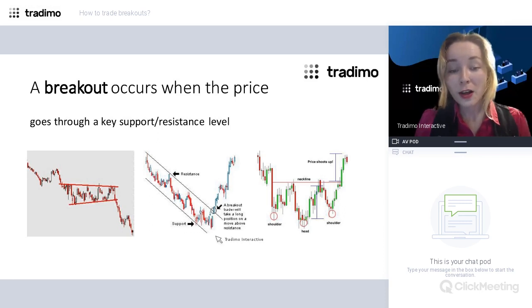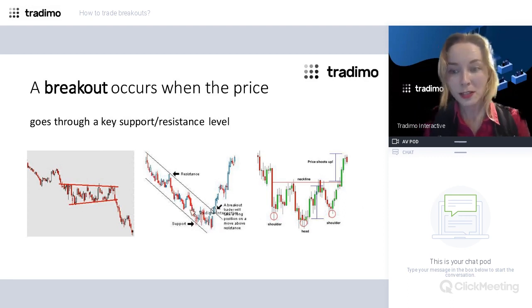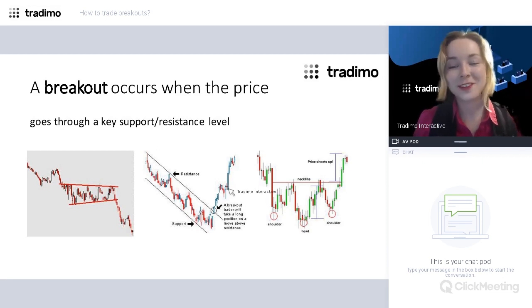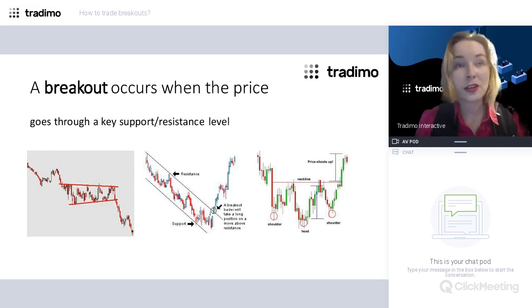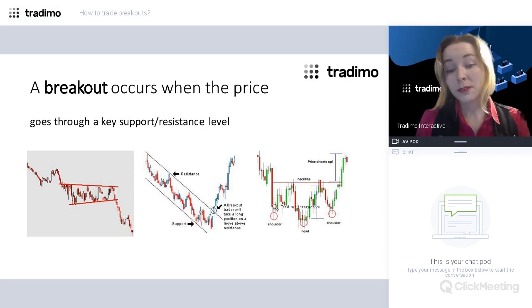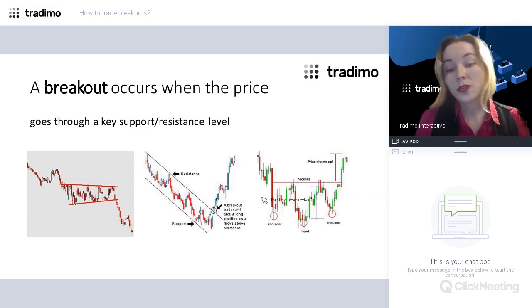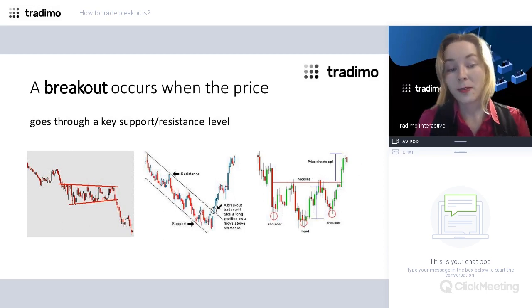At some point the price will have to go beyond the lower or upper border of the range — in other words, there will be a breakout. Another case is when we have a trend and the price respects the support and resistance lines for some time, but then something happens — a major market change — and we get a breakout out of that trend. Another case is when the price forms specific chart patterns, for example head and shoulders, double tops, double bottoms, or continuation patterns like triangles, wedges, and flags.